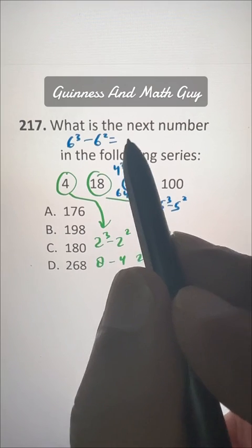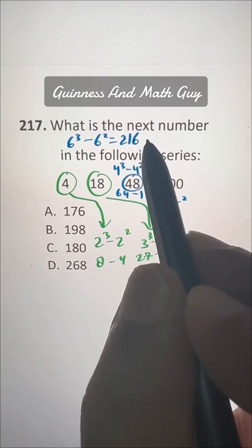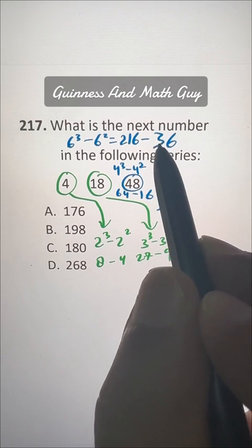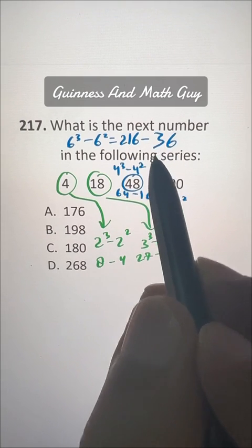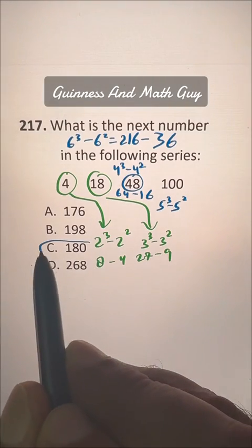6 cubed is 216 minus 6 squared is 36. And if you do 216 minus 36, you will get 180. That's our answer, choice C.